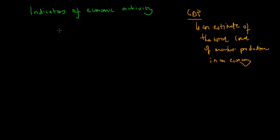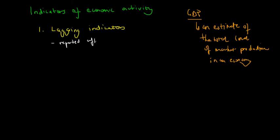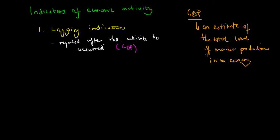We're going to focus on other indicators of economic activity beyond GDP. There are three different types. First, we have what are called lagging indicators, which means they are reported after the activity has occurred. GDP is an example of a lagging indicator because you can't measure it prior to market production — you have to measure it after the period has occurred.